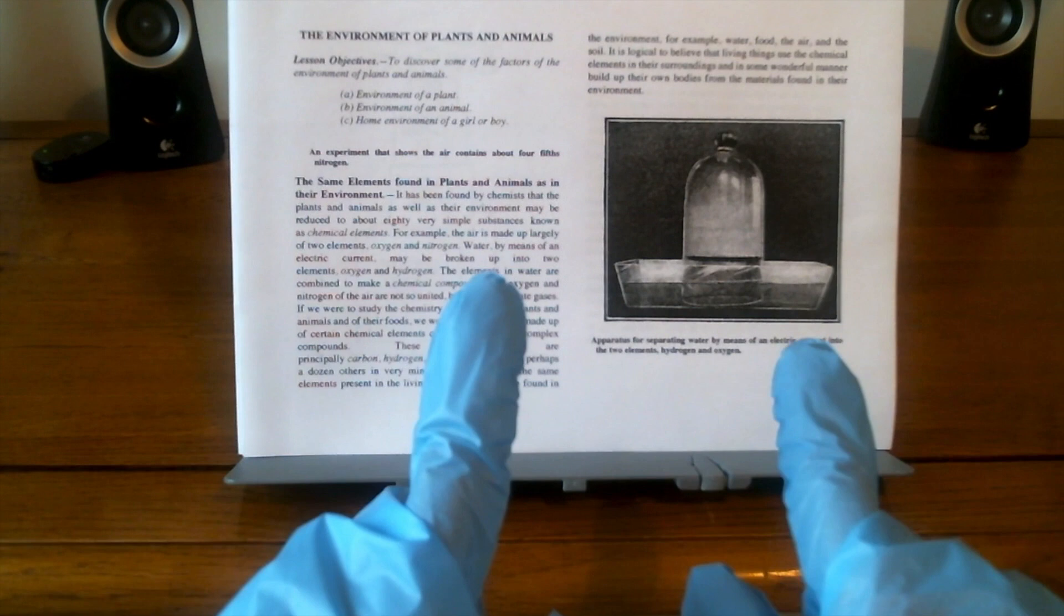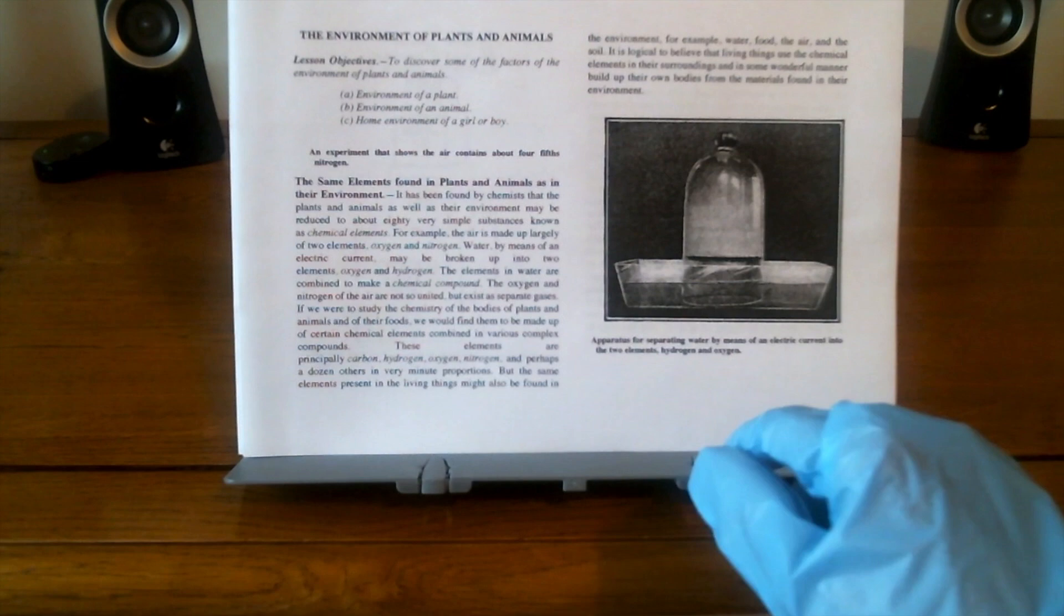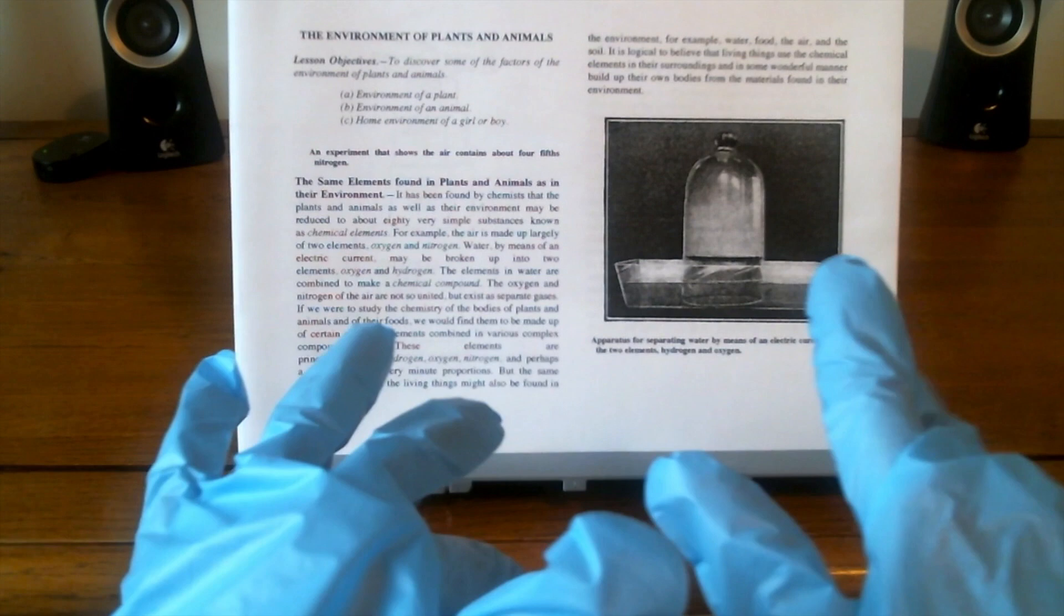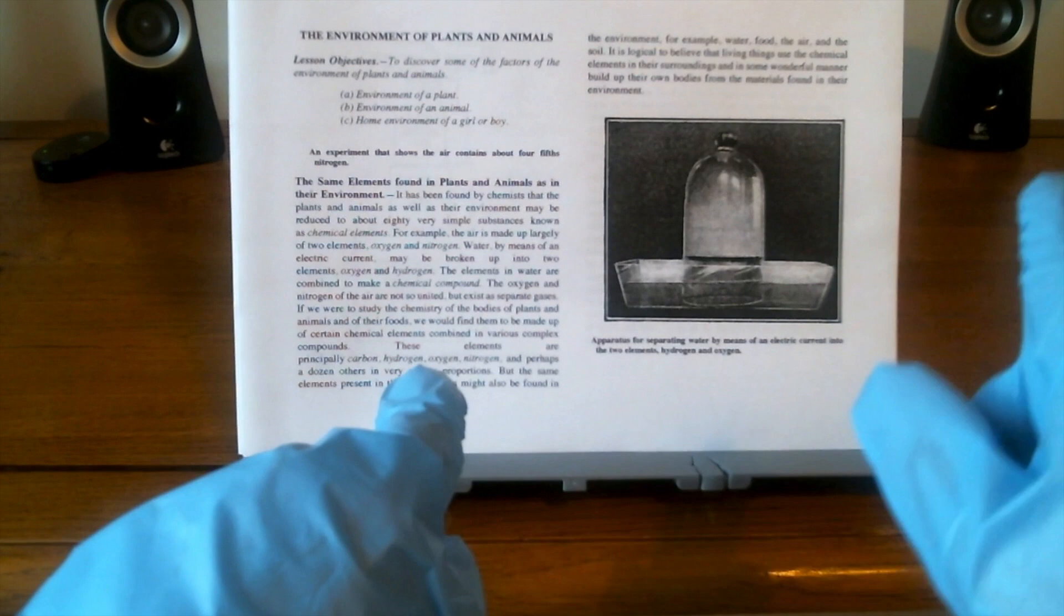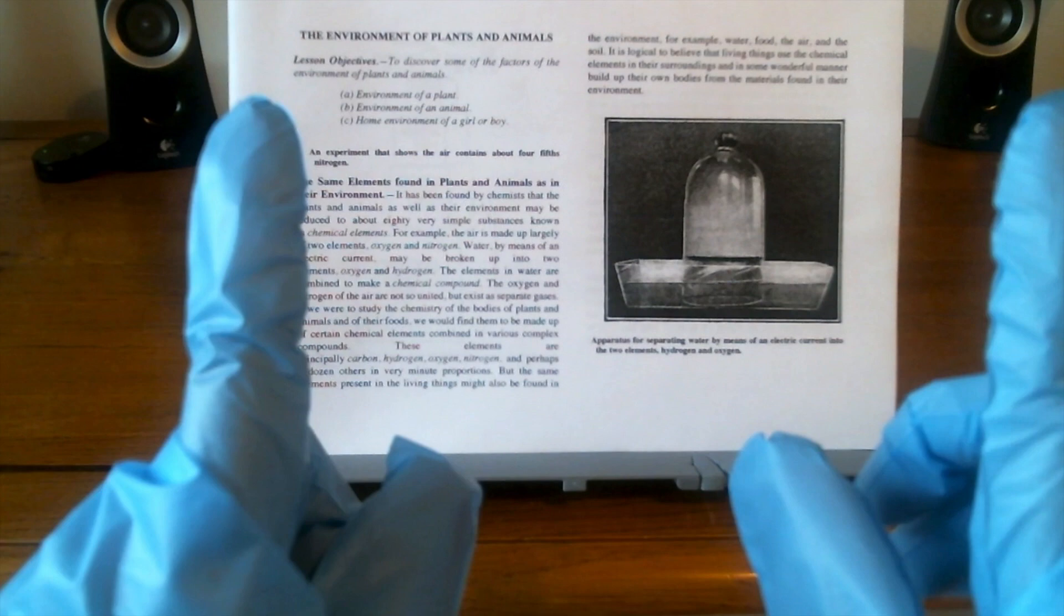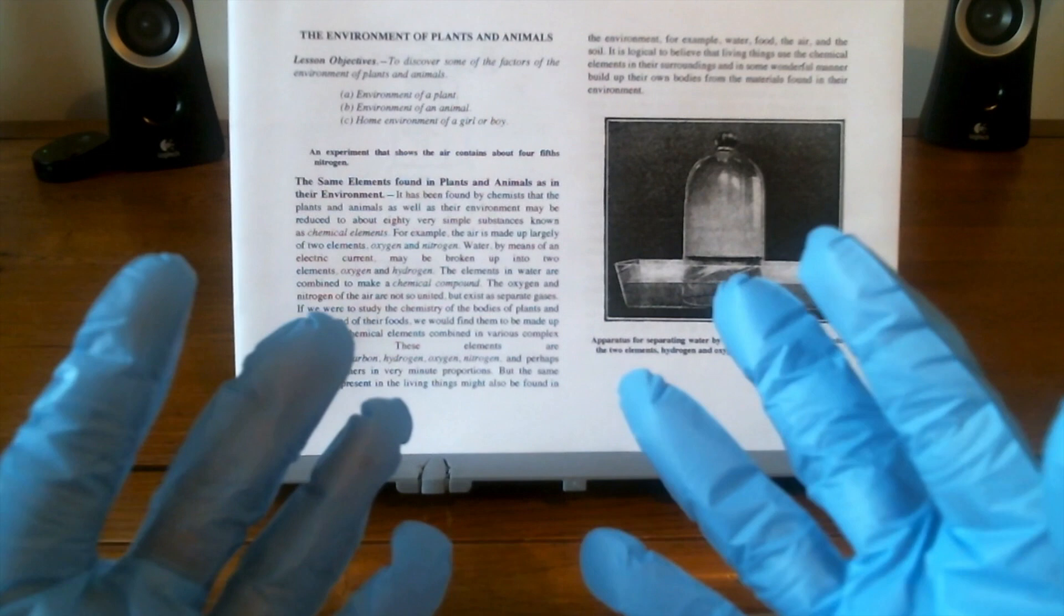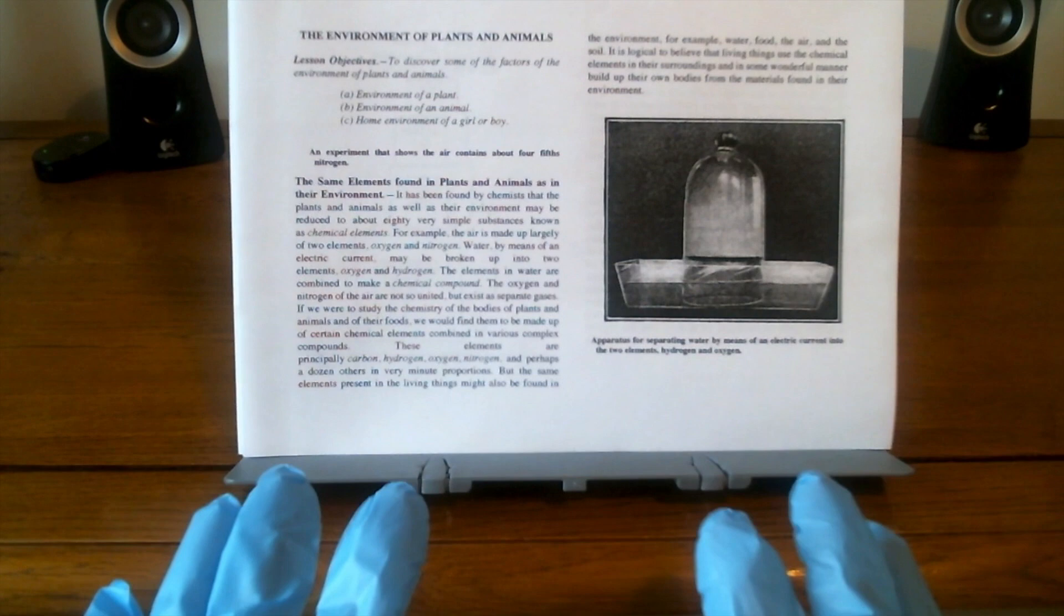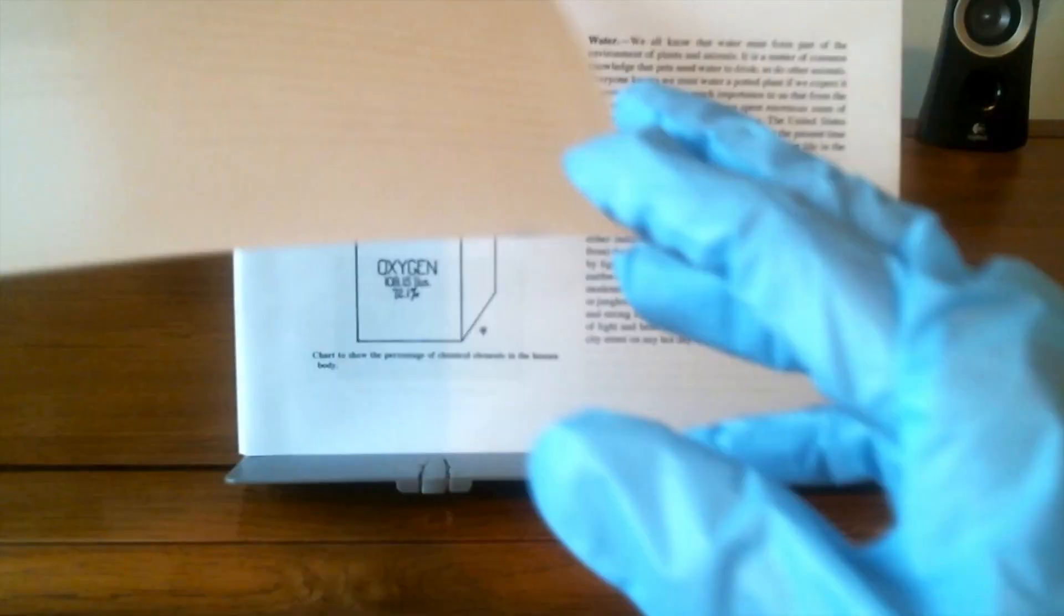Now, let's look at the illustration. Here we have an apparatus which is for separating water by means of an electric current into the two elements, hydrogen and oxygen. Okay everyone, are you with me in the textbook? Do we have any questions? Okay, moving on.